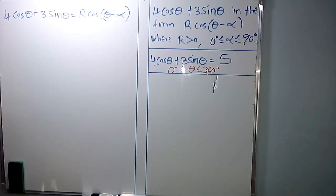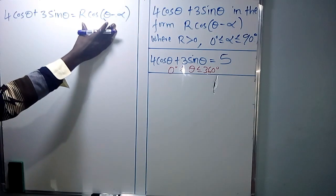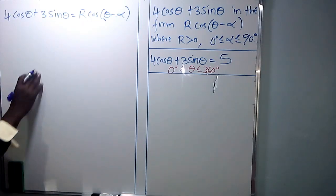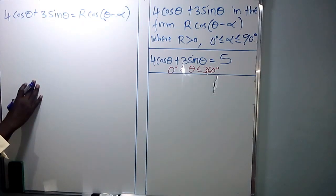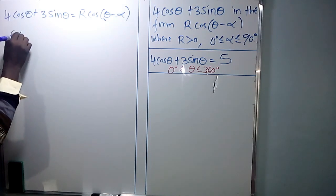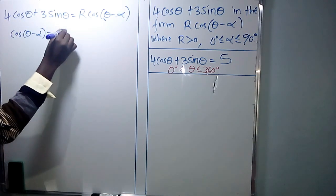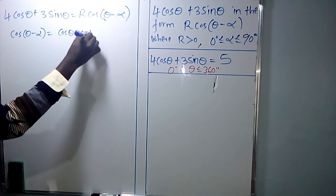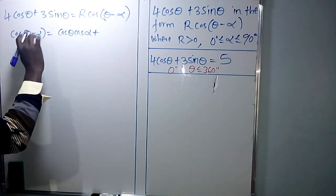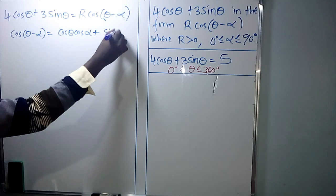We are told to express 4 cos theta plus 3 sin theta in the form R cos(theta minus alpha). So we start with cos(theta minus alpha). Cos(theta minus alpha) is cos theta cos alpha — if the left-hand side is negative, the right-hand side is positive — then plus sin theta sin alpha.